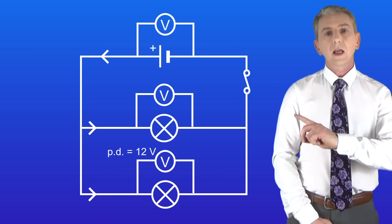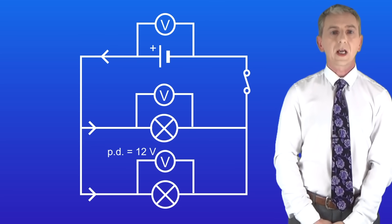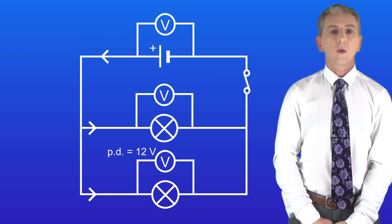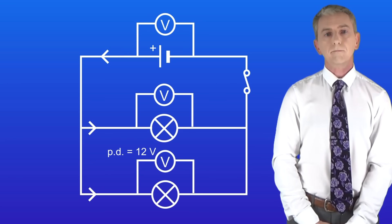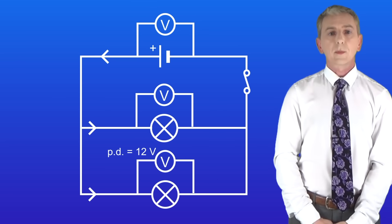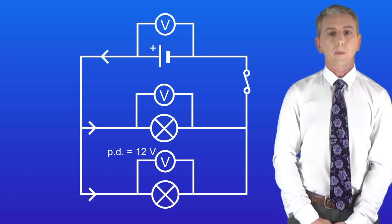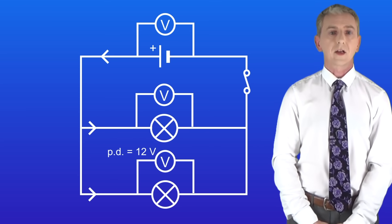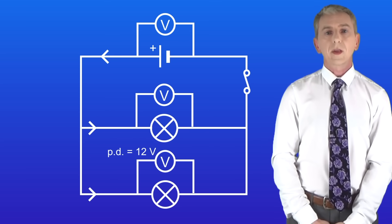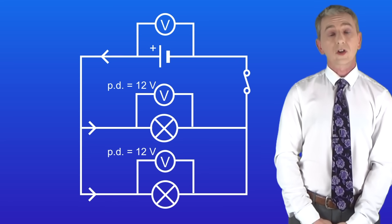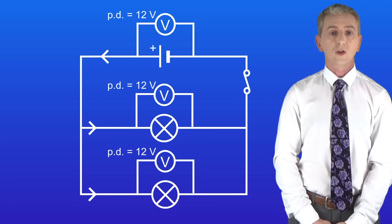Here's a circuit — I'd like you to determine the potential difference across the top lamp and the cell. Pause the video and try this yourself. The potential difference across the bottom lamp is 12 volts, and in a parallel circuit all components connected in parallel have the same potential difference. So the potential difference across the top lamp will be 12 volts and the potential difference across the cell will also be 12 volts.